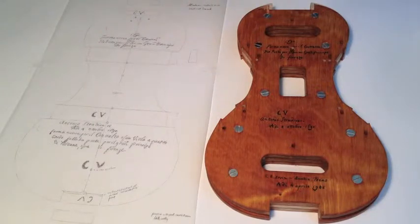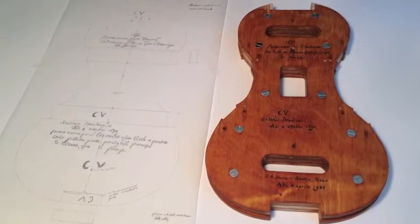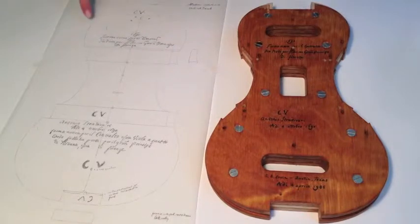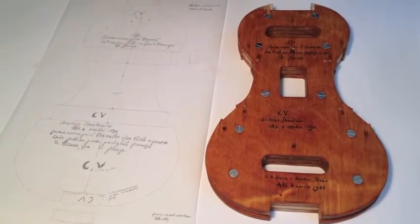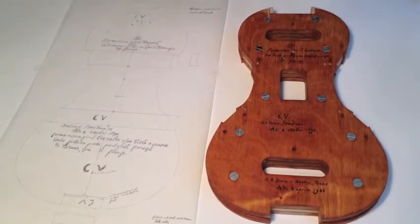Something that came up after the first two violas had been made on this form was the realization that Stradivari himself actually shortened his viola form slightly by about 4mm.